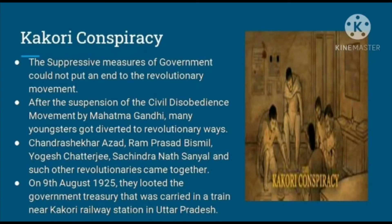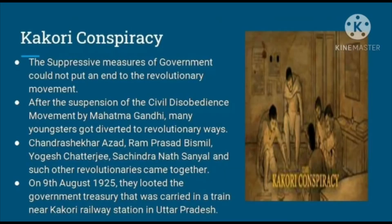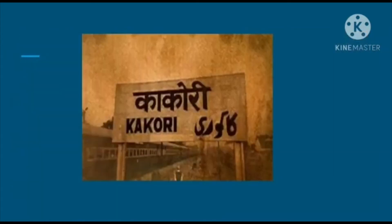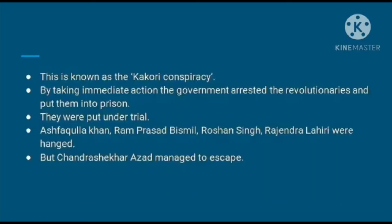After the suspension of the Civil Disobedience Movement by Mahatma Gandhi, many youngsters got diverted to revolutionary ways. Chandrasekhar Azad, Ram Prasad Bismil, Yogesh Chatterjee, Sachindranath Sanyal, and many other revolutionaries came together. On 9th August 1925, they planned a conspiracy — they looted the government treasury carried in a train near Kakori railway station in Uttar Pradesh. This incident is known as the Kakori Conspiracy. The government arrested the revolutionaries and put them on trial. Ashfaqulla Khan, Ram Prasad Bismil, Roshan Singh, and Rajendra Lahiri were hanged, but Chandrasekhar Azad managed to escape.